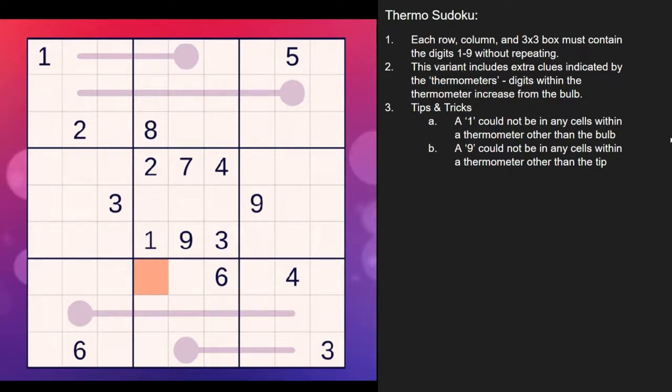What I try to do in these is I try to find the upper and lower bounds or the highest and lowest possible digits in each cell within a thermometer. And that's really helpful. And the easiest way to do that is if you put a one in at the bulb and just go up in sequential order.